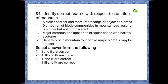Next question: identify the correct features with respect to zonation of mountains. The given statements are: a closer contact and more interchange of adjacent biomes; distribution of biotic communities in mountainous regions is simple but not complicated; major communities appear as irregular bands with narrow ecotones; generally on a mountain four or five major biomes may be present.